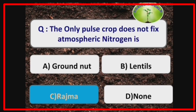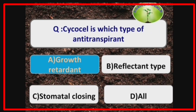The only pulse crop that does not fix atmospheric nitrogen is Rajma, i.e., Phaseolus vulgaris. Psychocel is a growth retardant antitranspirant.